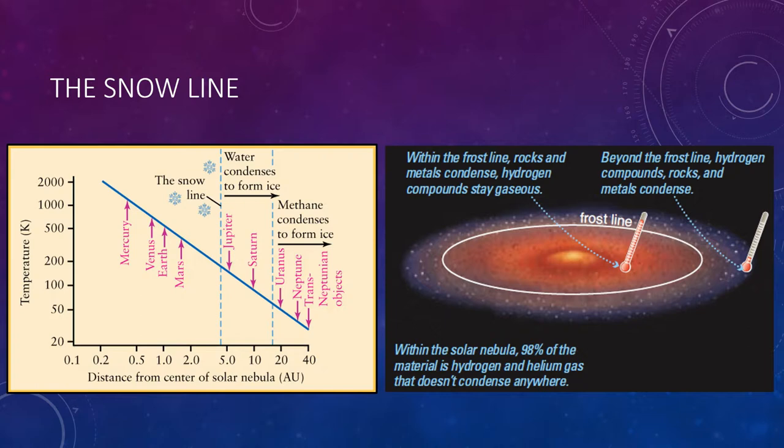This graph shows how temperature probably varied across the solar nebula as the planets were forming, and shows the present-day positions of the planets. Note the general decline in temperature with increasing distance from the center. Between the present-day distances of Mars and Jupiter, the snow line marks where temperatures were low enough for water to condense into ice, and beyond about 16 AU, methane could condense into ice as well.